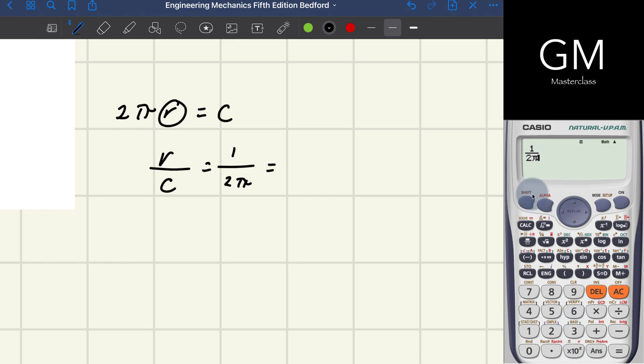We just have to press shift - the shift button has the same color as the π symbol. This equals 0.1591654.